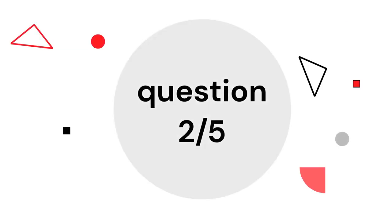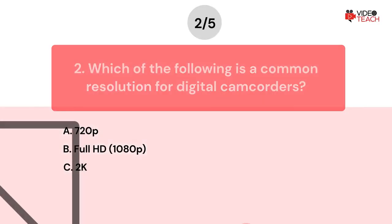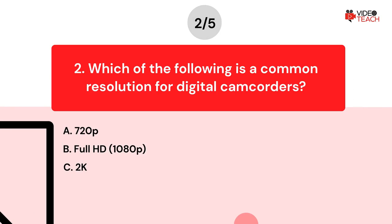Question number two. Which of the following is a common resolution for digital camcorders? Option A: 720 pixels. Option B: Full HD, 1080 pixels. Option C: 2K resolution.